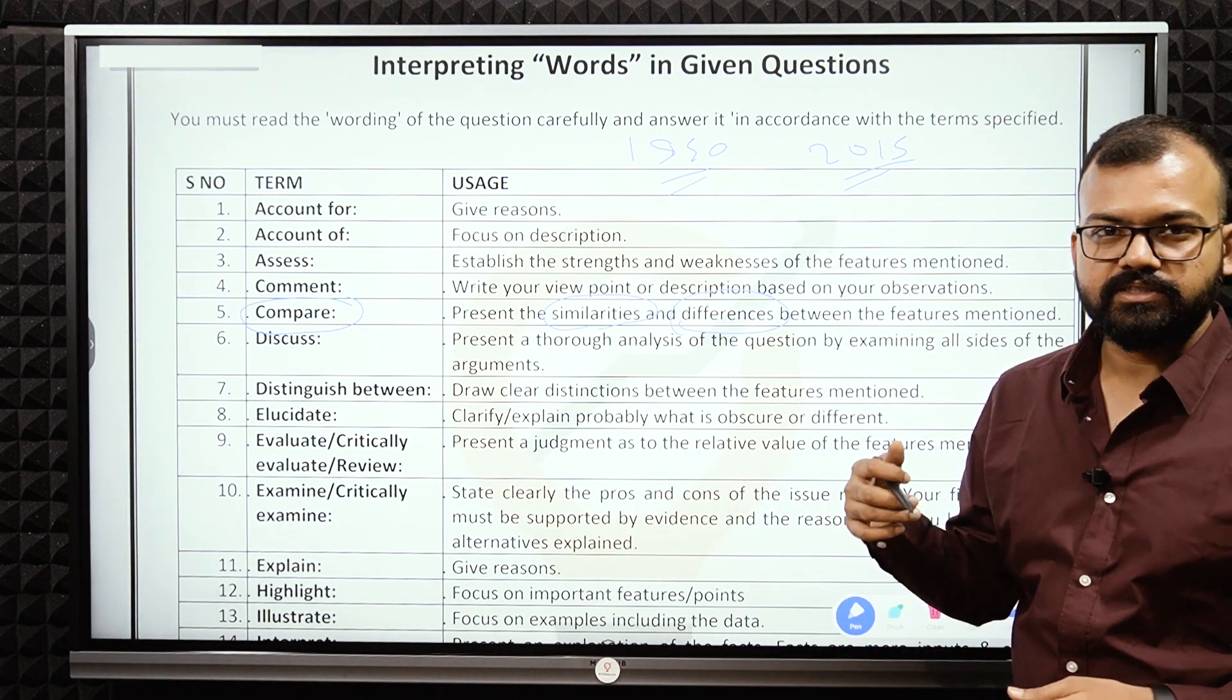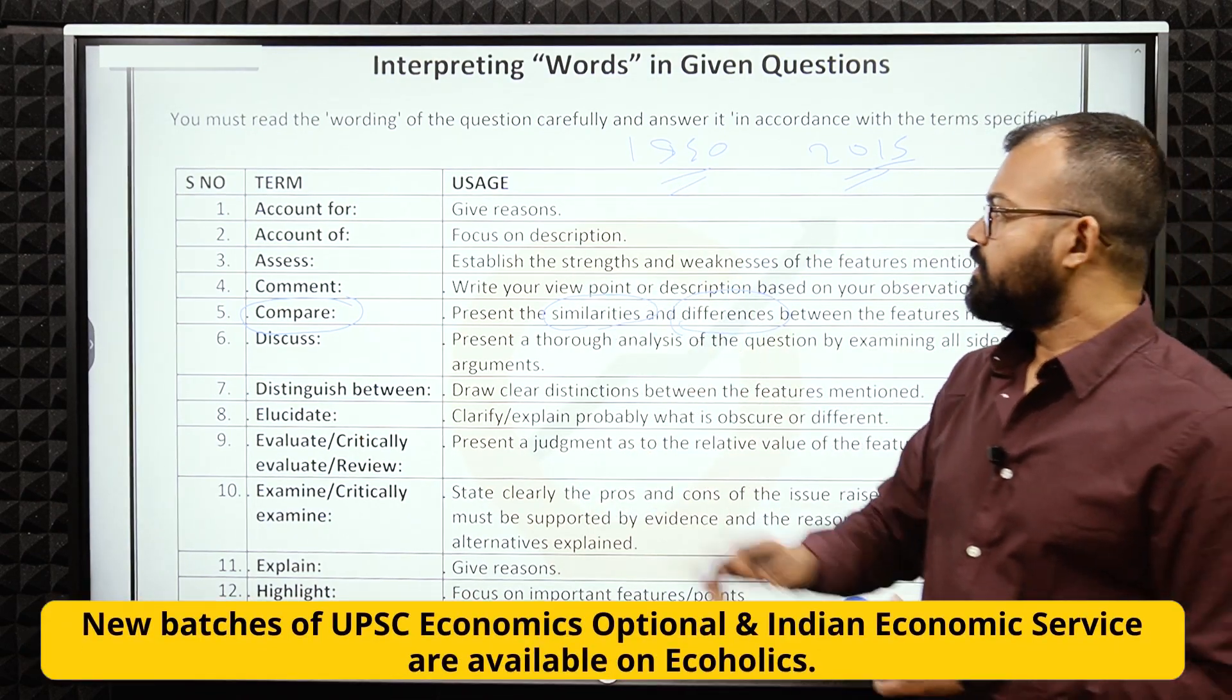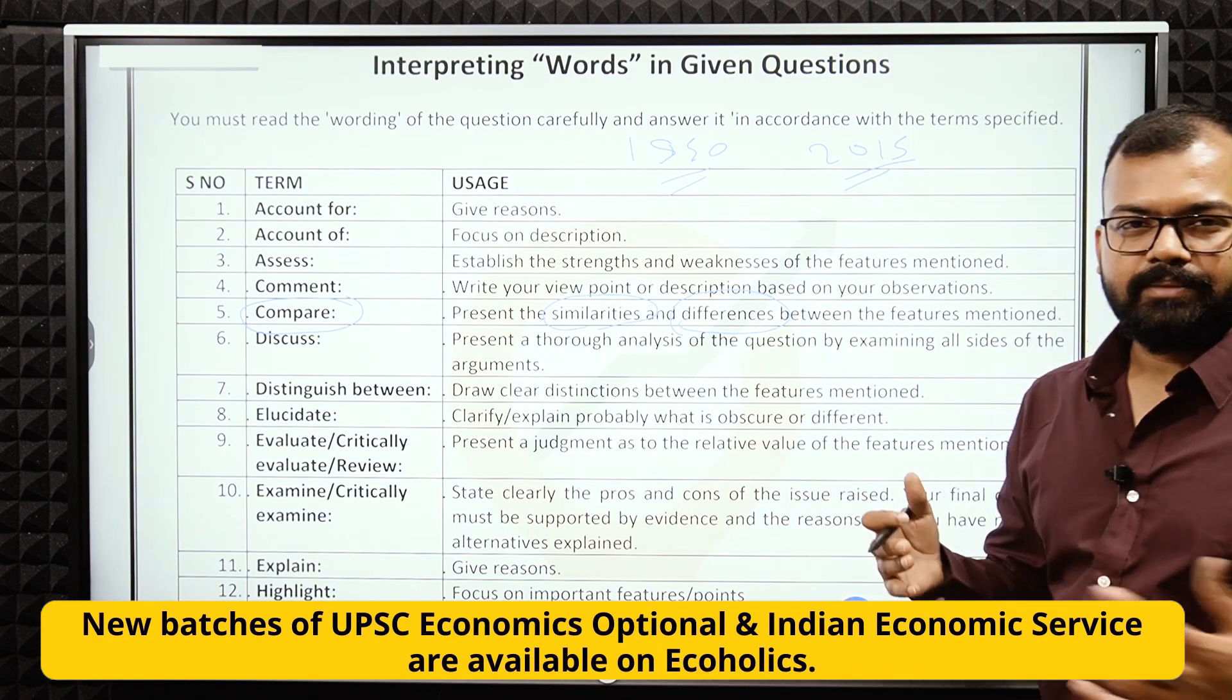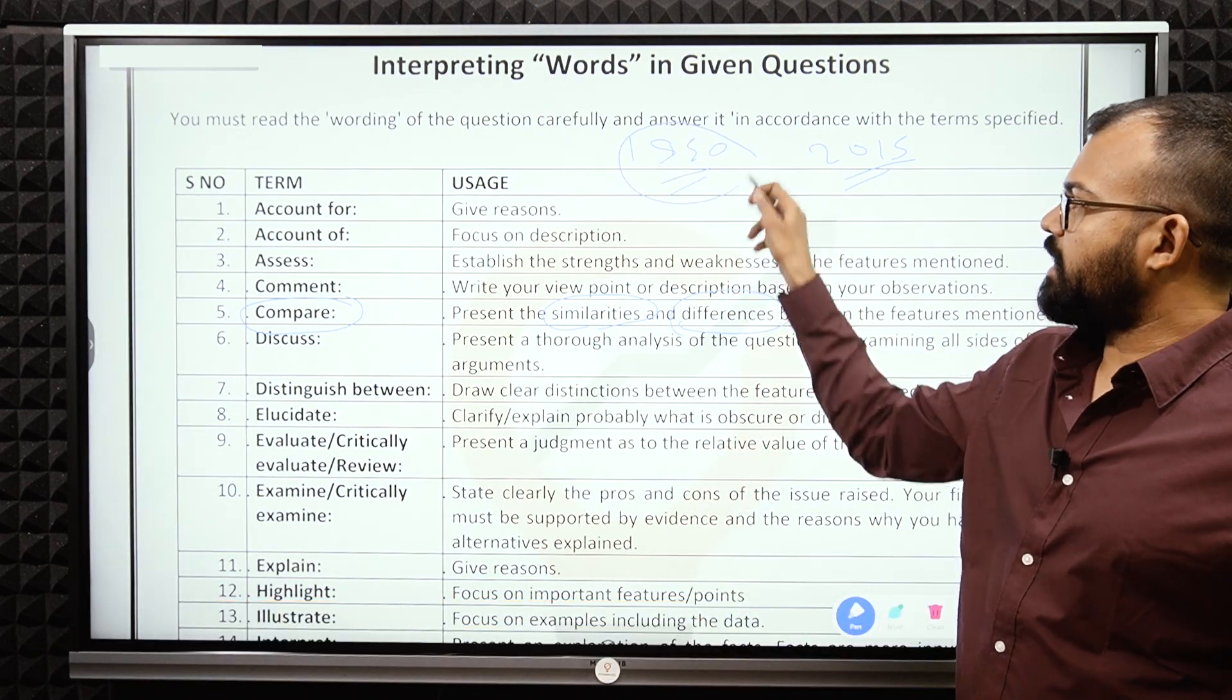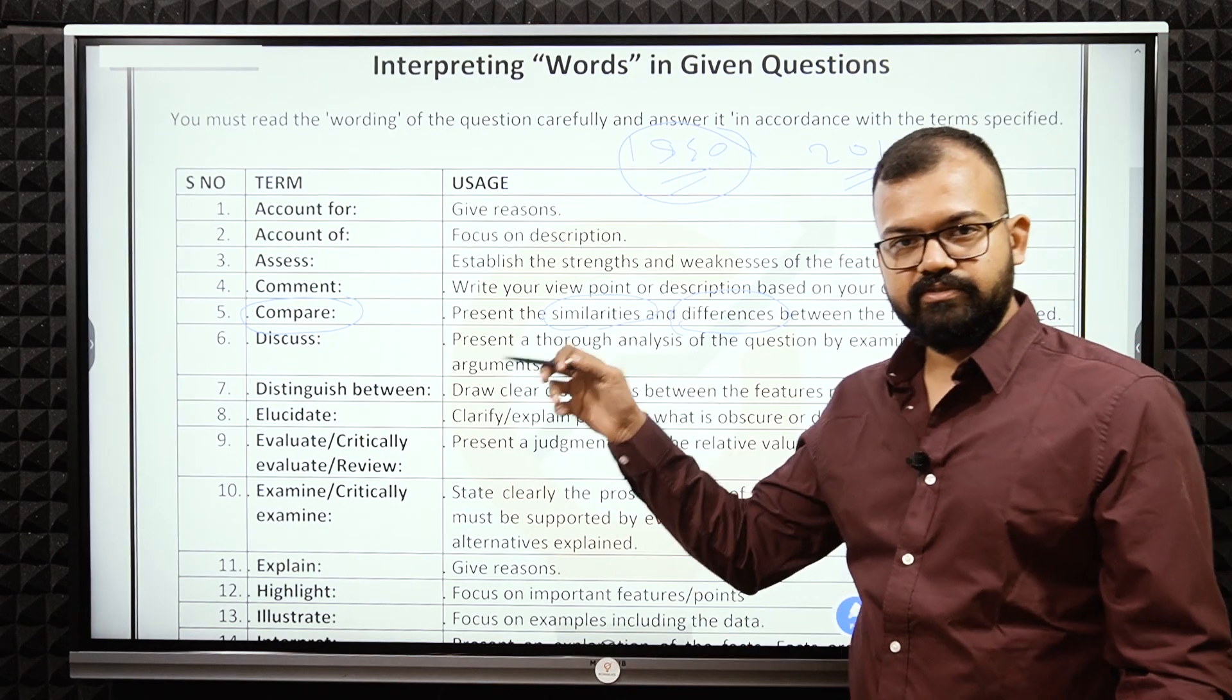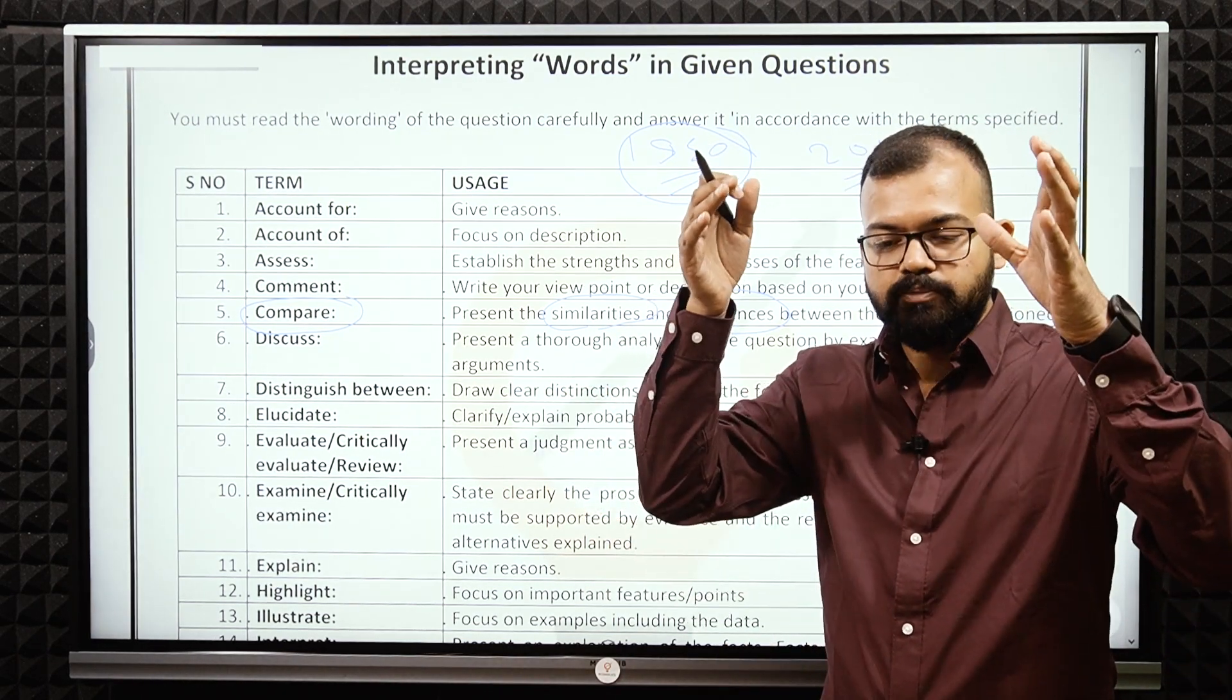Similarities and differences. What are the similarities? They are non-constitutional bodies. Similarities like the structure is almost similar. Prime Minister is the chair. Then there are several similarities. They make planning, etc. But what is the difference? The difference is the planning commission established in 1950 was based mainly on planning, top to bottom.